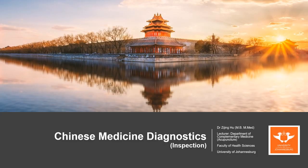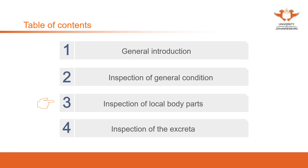Hello everyone. In this video we are going to talk about the inspection of local errors. In the previous video, we introduced the inspection of general condition — the first thing we assess when we see a patient. We see the general condition from their facial complexion, colors, luster, posture and movements. In this video, we talk about the local body parts.